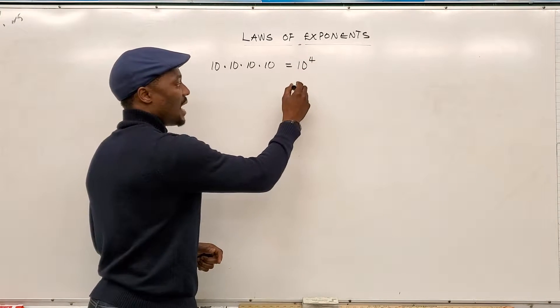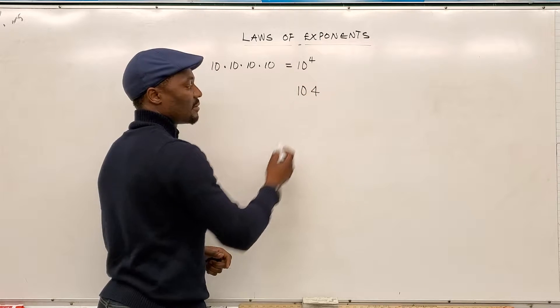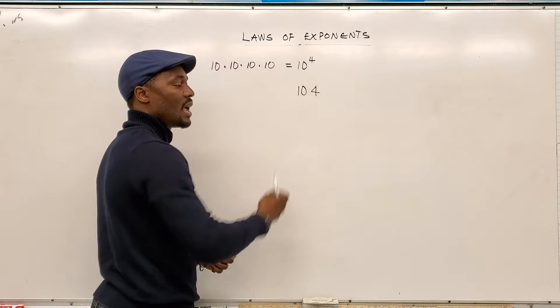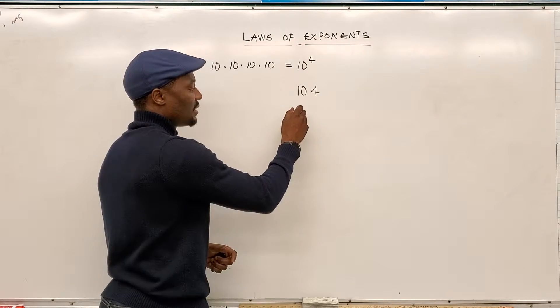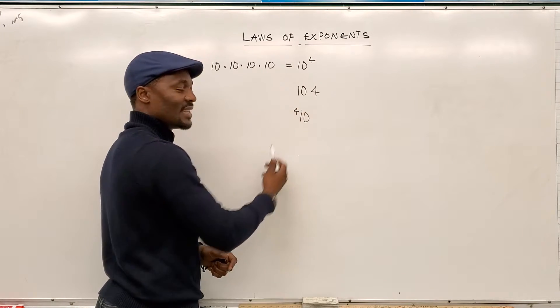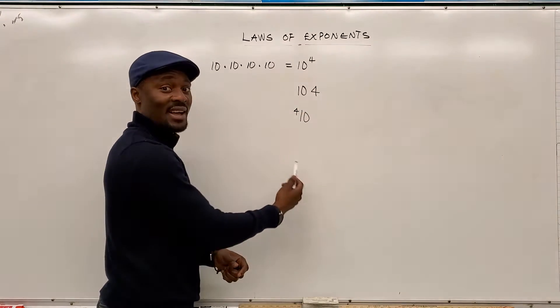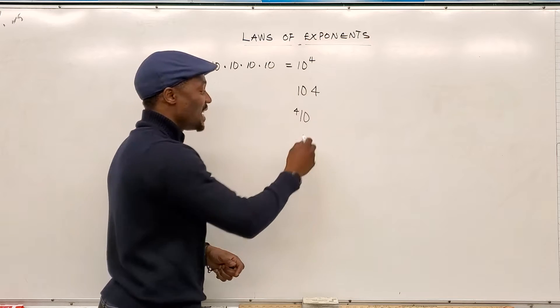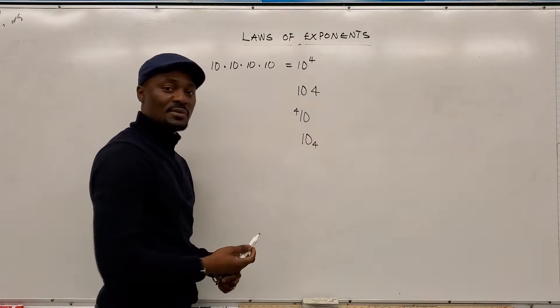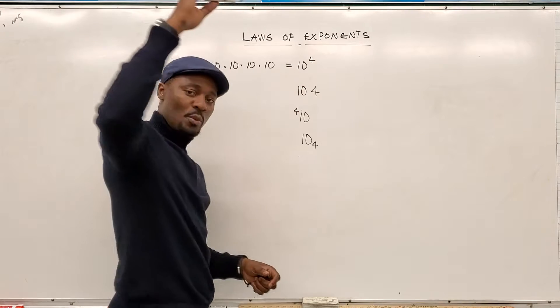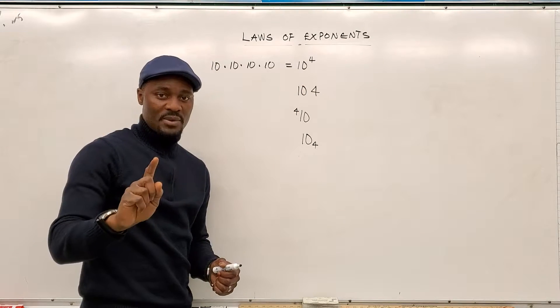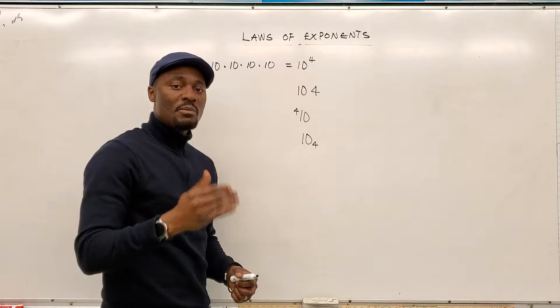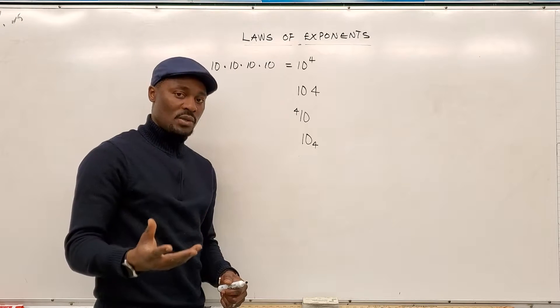Please do not write 10 with the 4 next to it. It has to be smaller and to the right. It is not 10 times 4. This means something else in math. And it is not 10 subscript four. It is 10 superscript four. Remember that. And it simply means you have multiplied 10 by itself four times.